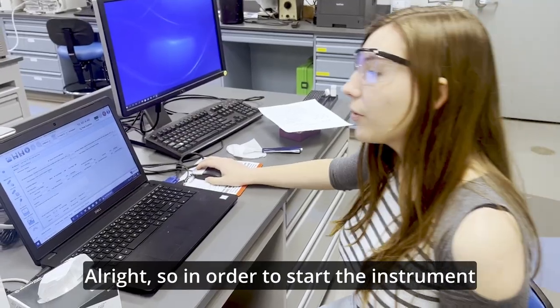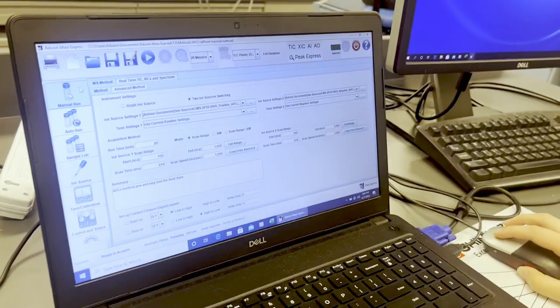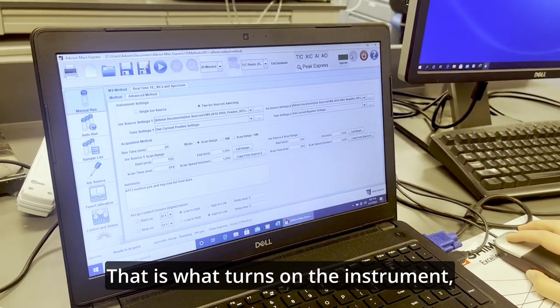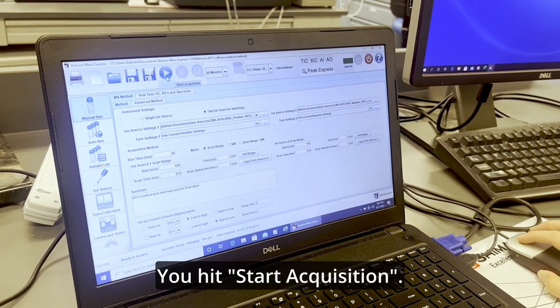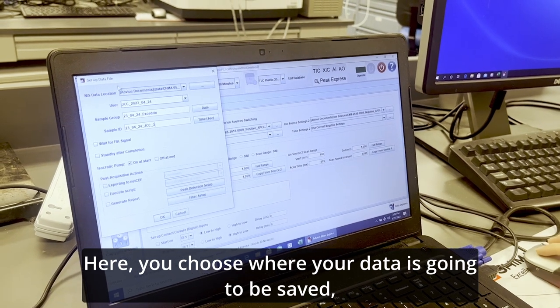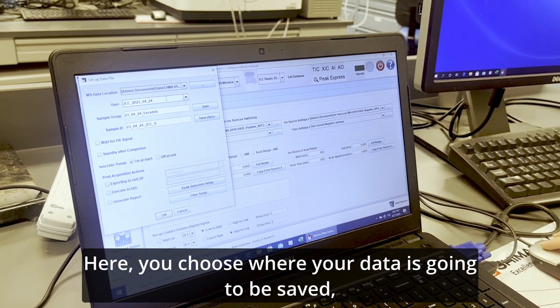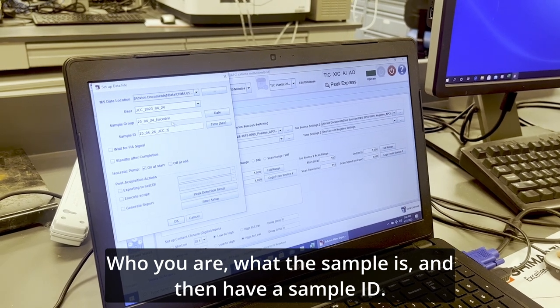All right. So in order to start the instrument, you pull up manual run. Now first, this has to be selected. That is what turns on the instrument, but this has already been selected by CJ earlier. You hit start acquisition. Here you choose where your data is going to be saved, who you are, what the sample is, and then have a sample ID.